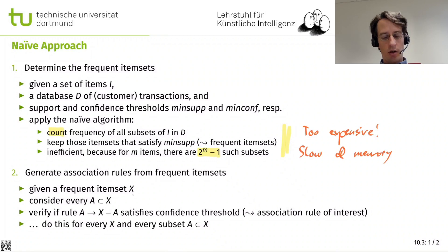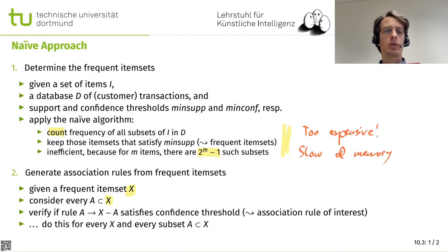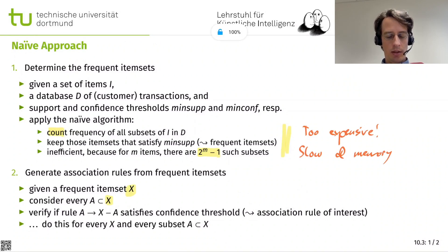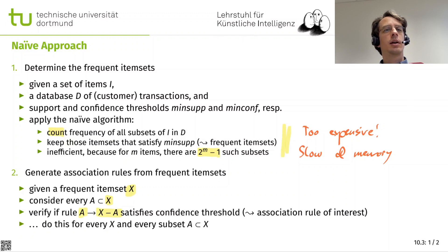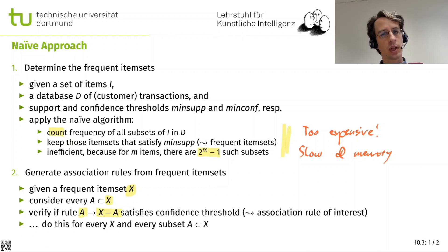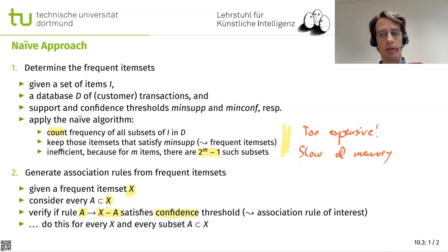To generate association rules, we iterate over all frequent itemsets X. For every subset A of X — excluding the empty subset and A equal to X — we construct a rule: A implies X minus A. So we split the items of X into possible pairs of body and head, then compute the confidence for each. If the confidence is large enough, it is a result. We do this for every possible X and subset of it. This is also fairly expensive, which is why the naive approach is not useful in practice.